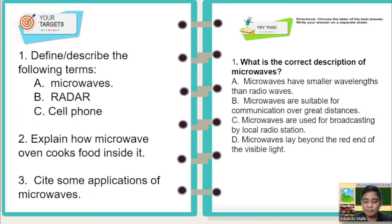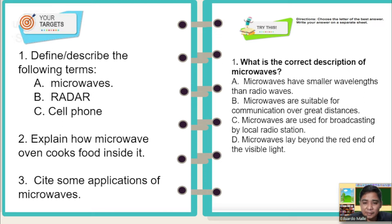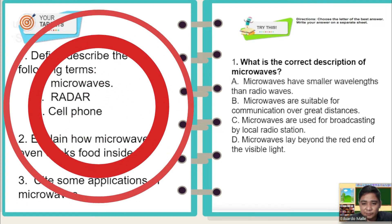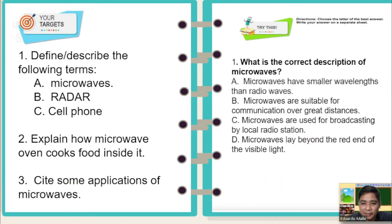Before we proceed to the different exploratory activities, we are going to answer these pre-test questions. Number one: what is the correct description of microwaves? A: microwaves have smaller wavelengths than radio waves. B: microwaves are suitable for communication over great distances. C: microwaves are used for broadcasting by local radio stations. D: microwaves lay beyond the red end of visible light. The answer is letter A — microwaves have smaller wavelengths than radio waves.